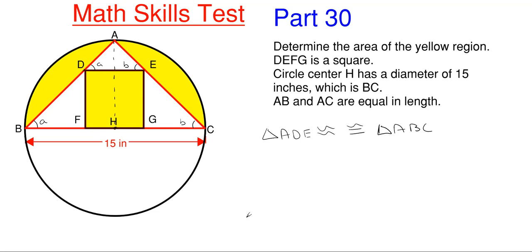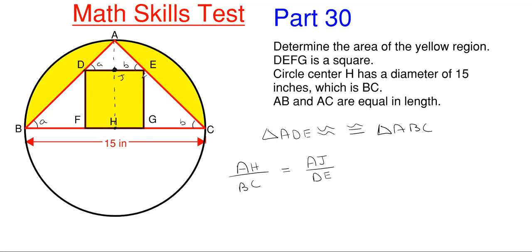Since these two are similar, triangle ADE will be similar to triangle ABC. We can set up a ratio that relates the height of the smaller triangle to the overall triangles. We have AH over BC — that's our overall height over our base for the larger triangle — equal to the height of our smaller triangle AJ over its base DE, which is our square length that we're looking for.